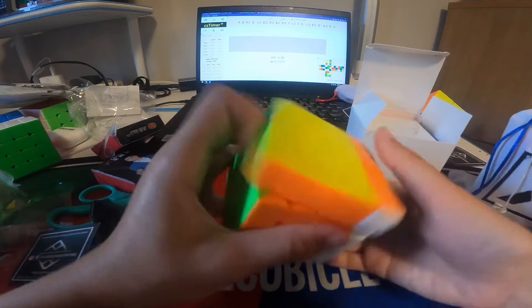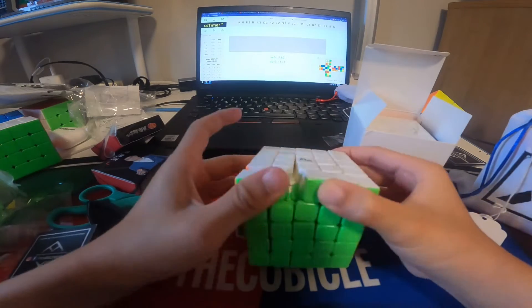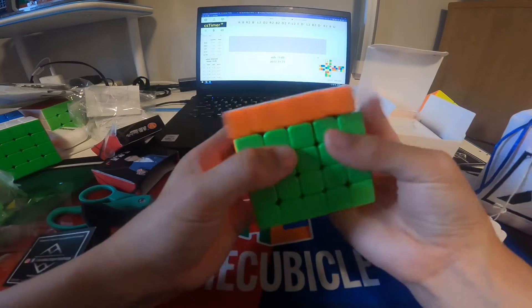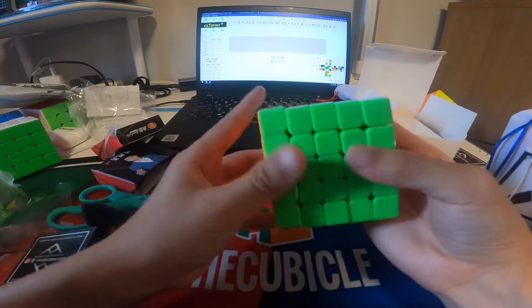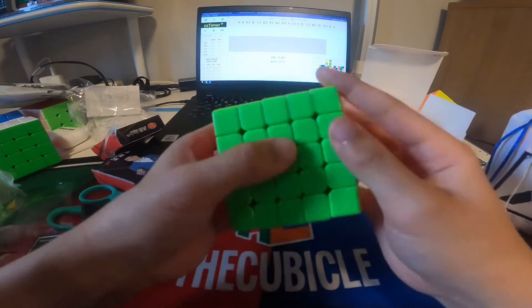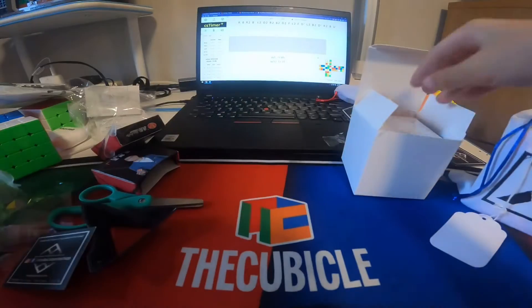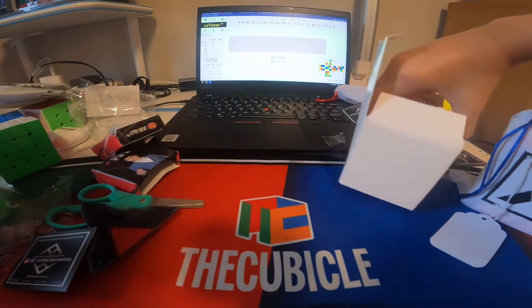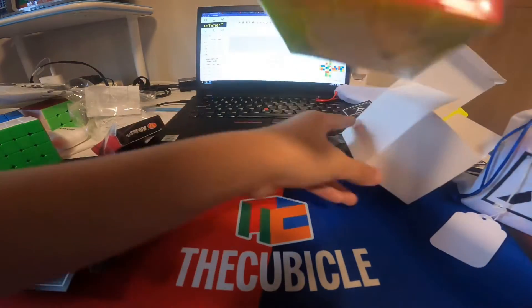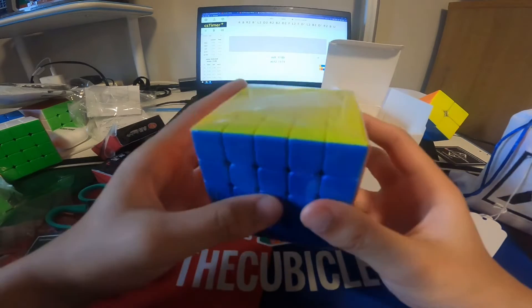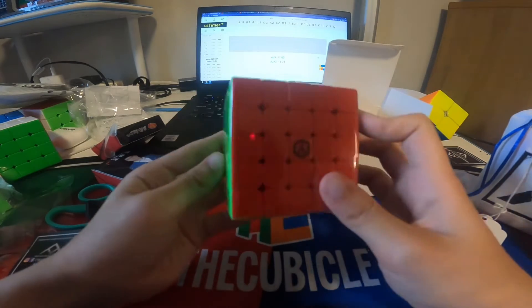This is my current main MGC 5. But I wanted to get an Angstrom one to set up, because I don't know how to set up 5x5s. Or I'm not really good at setting up cubes. I just put some DNM 37 and just done.